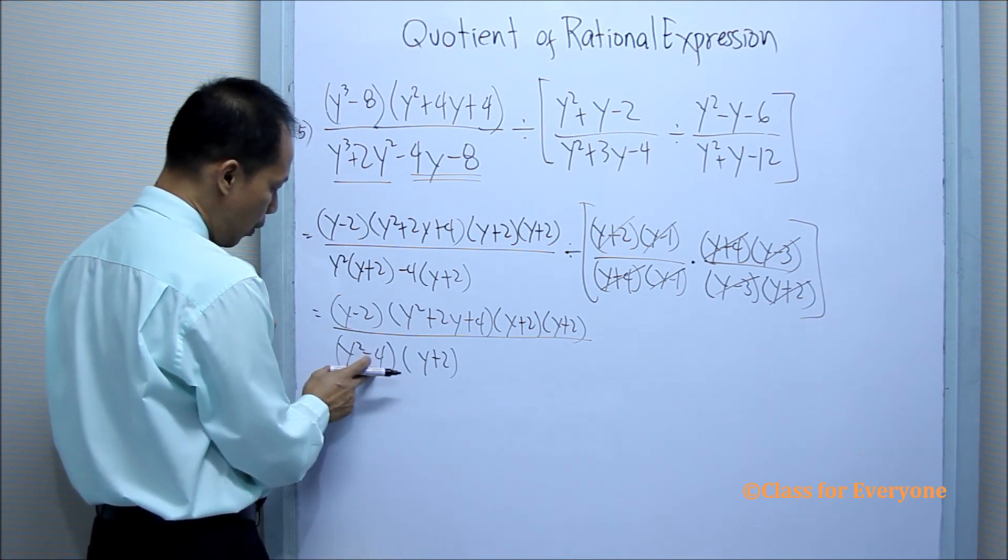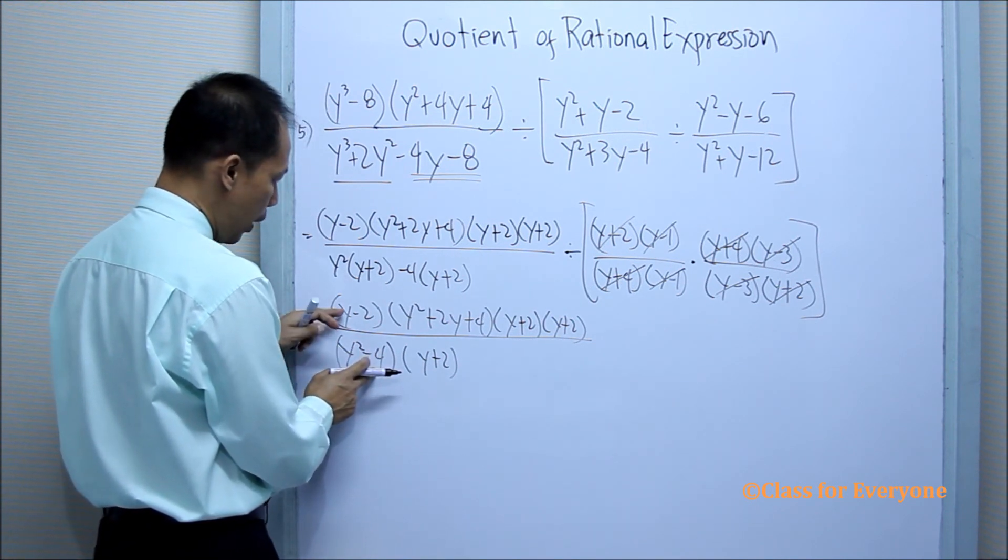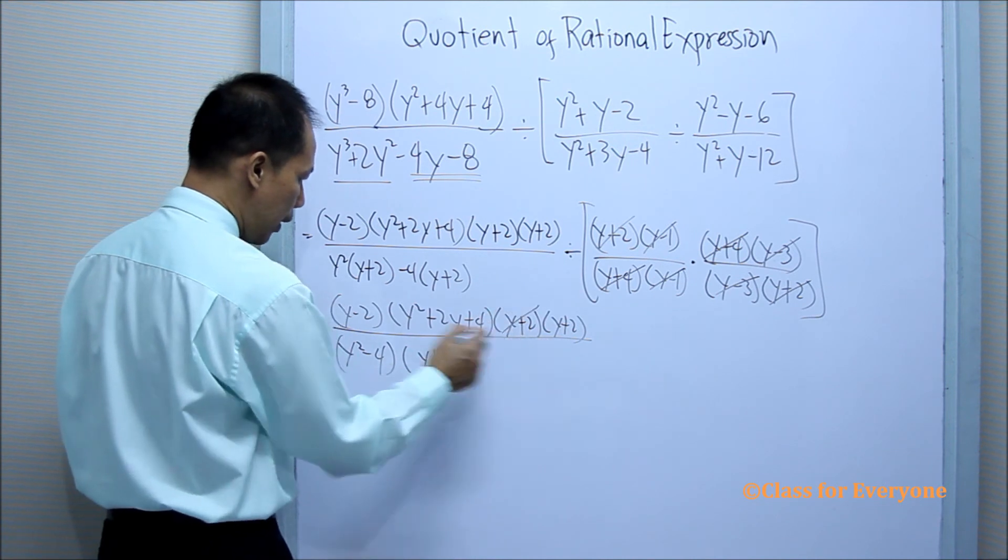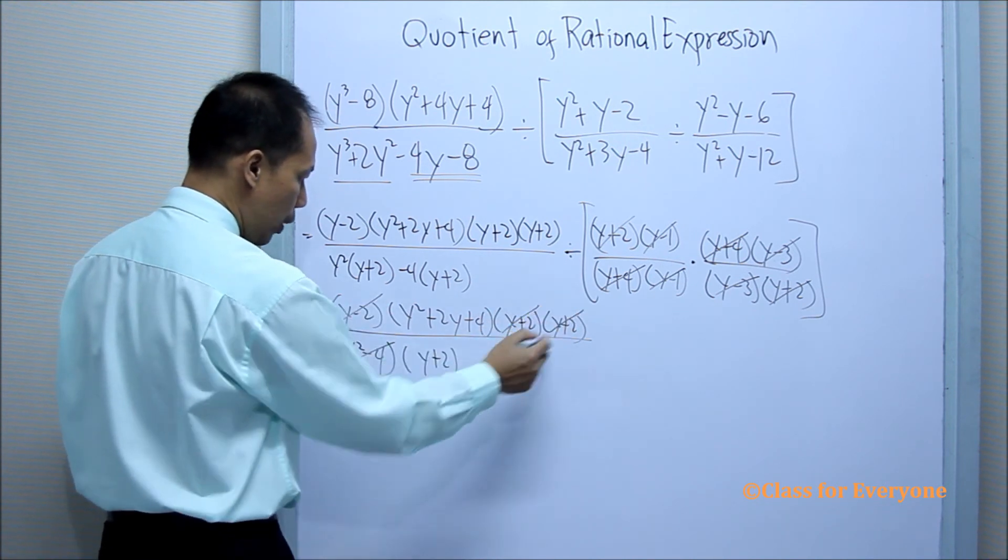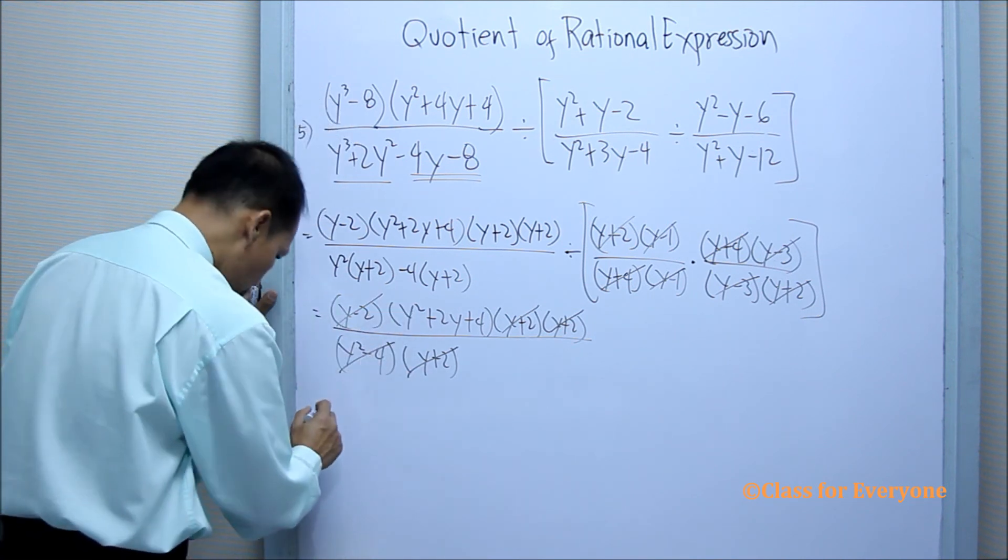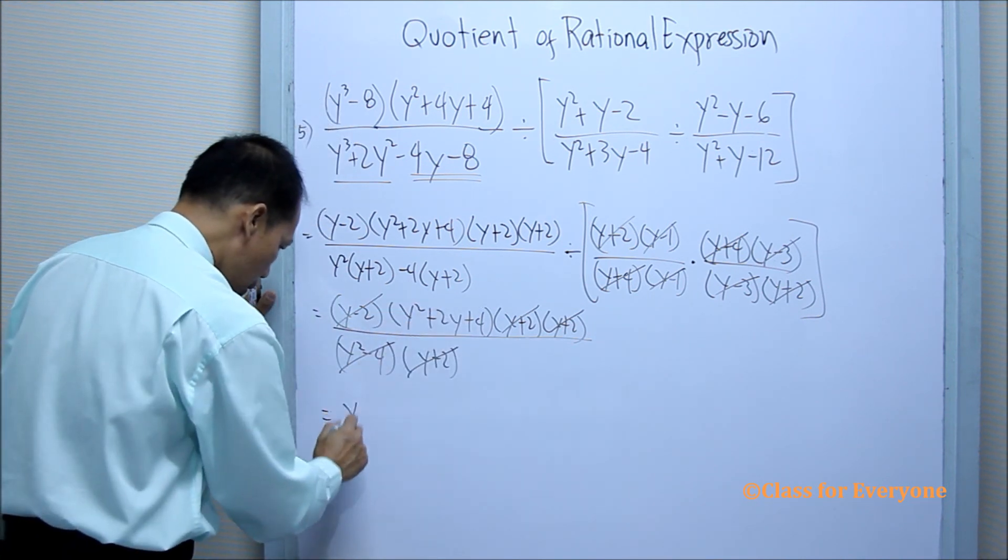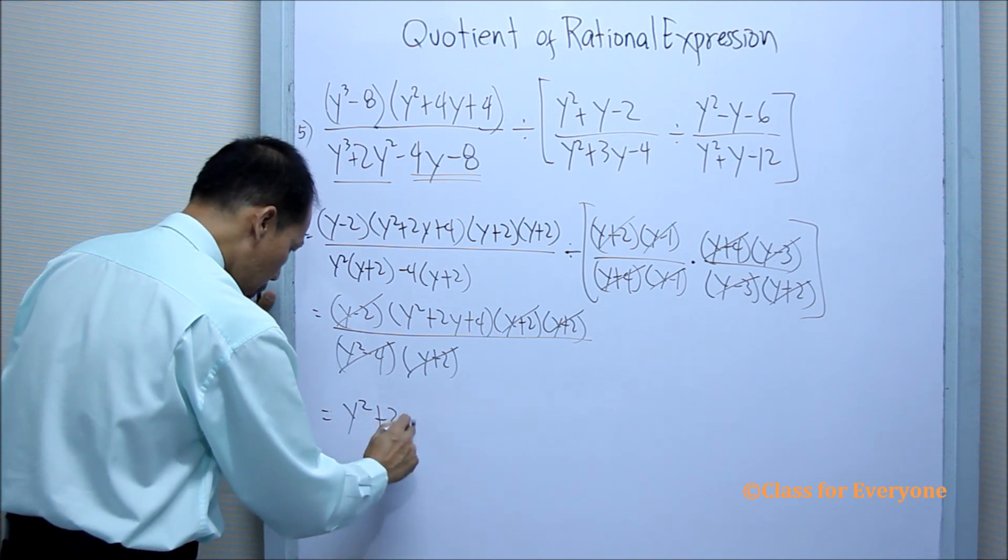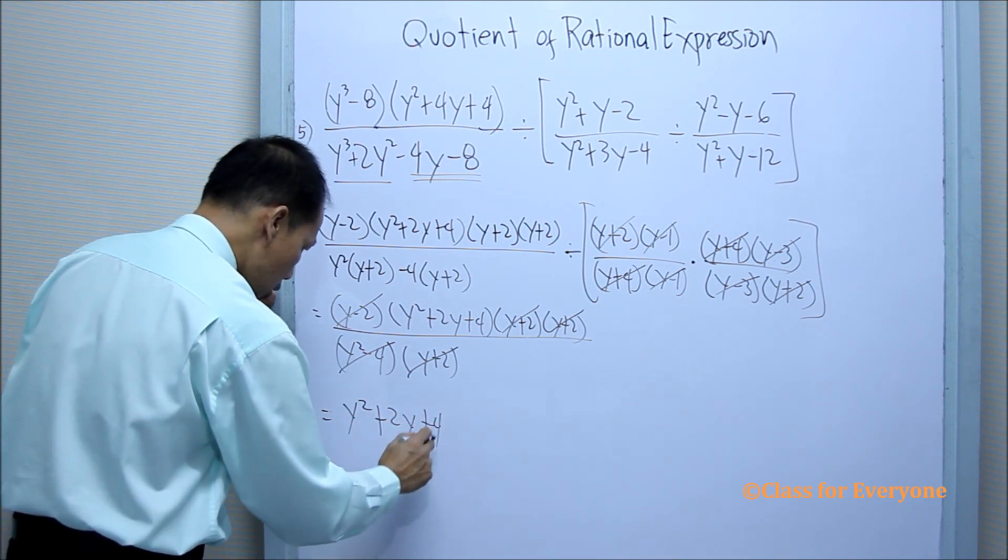y squared minus 4 has factors of y minus 2 and y plus 2, so we can divide this out. And then y plus 2 and y plus 2. What remains in the expression will just be the trinomial y squared plus 2y plus 4.